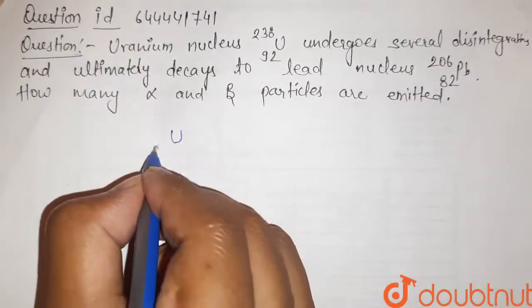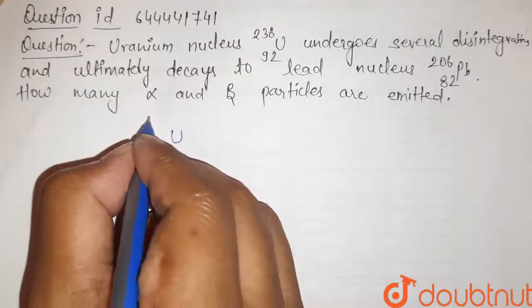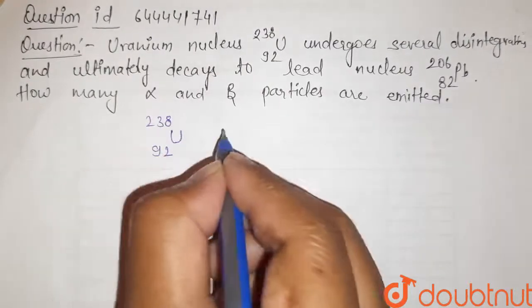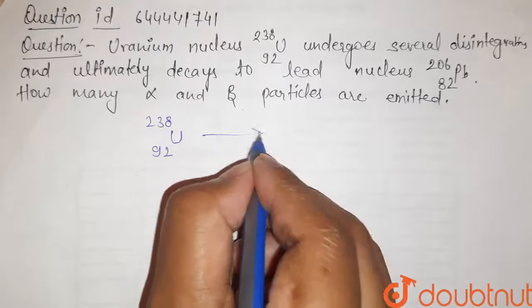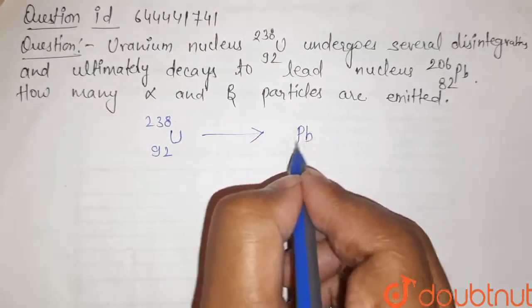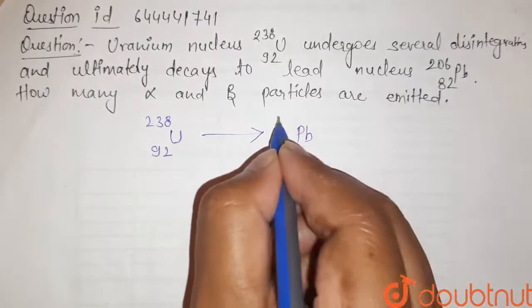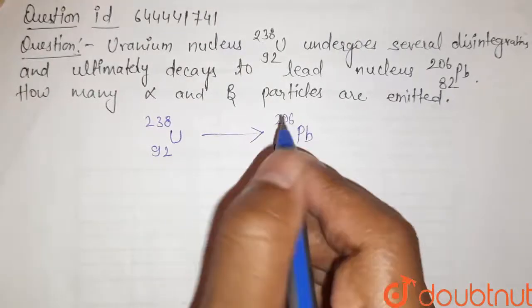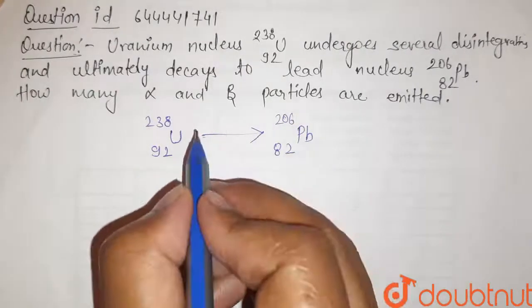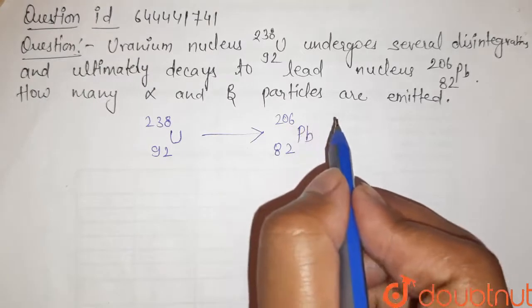So here, uranium U-92-238 is converted to Pb-82-206. Now we have to find how many alpha and beta particles are emitted.